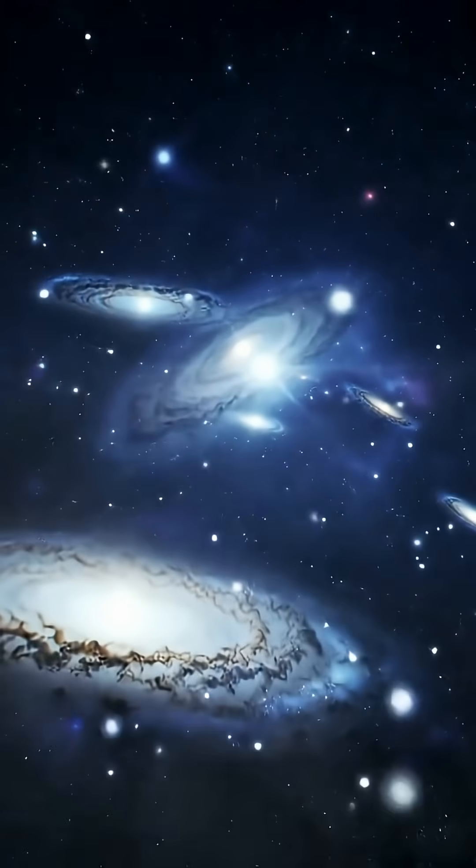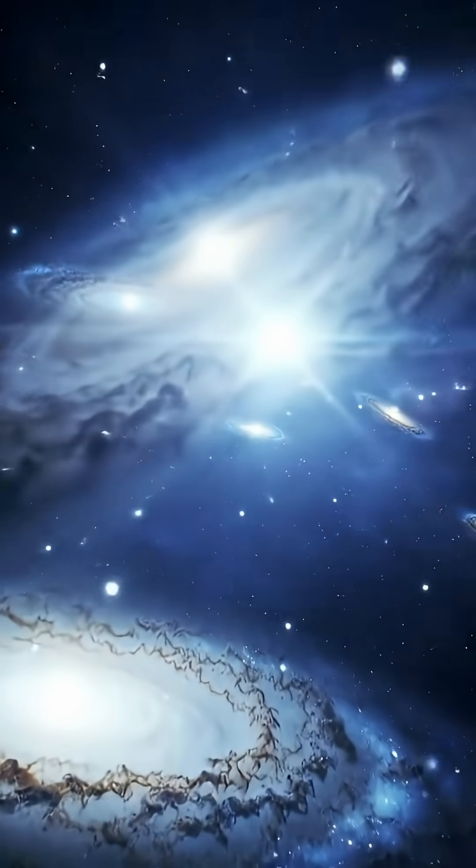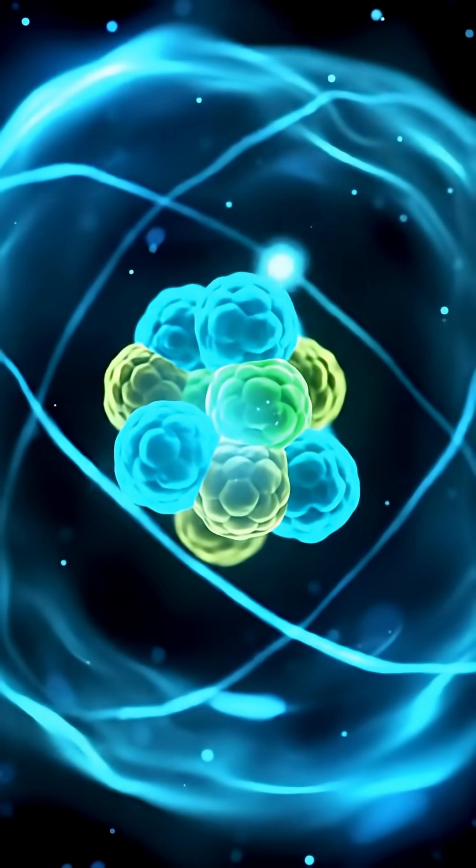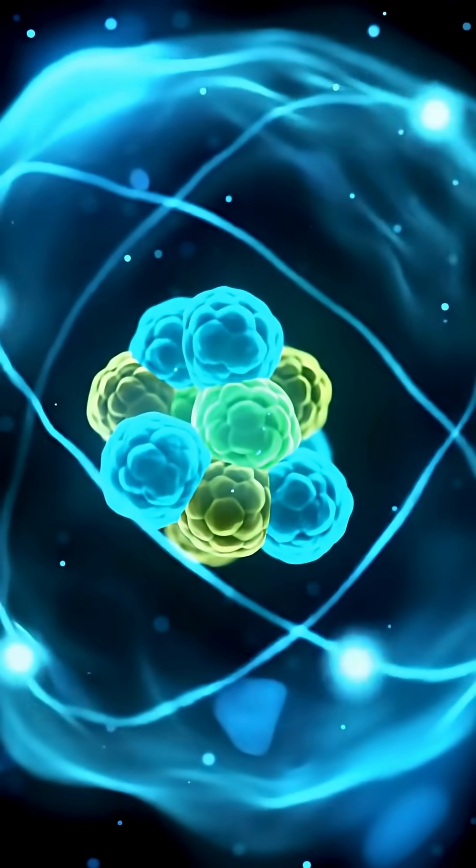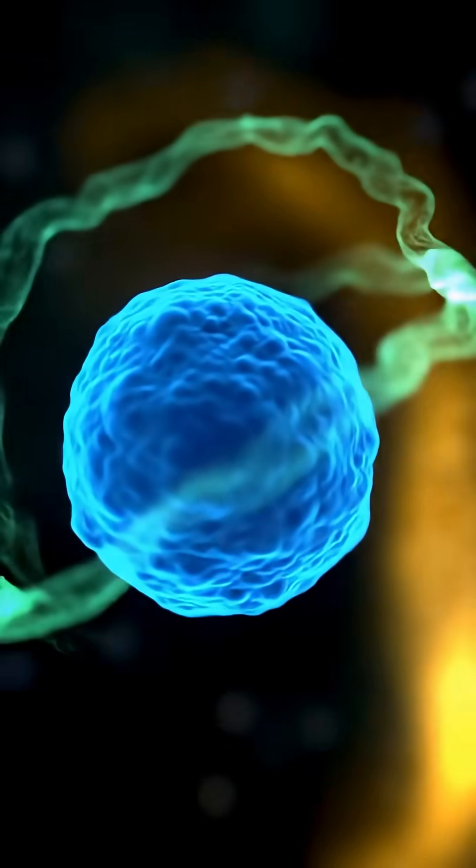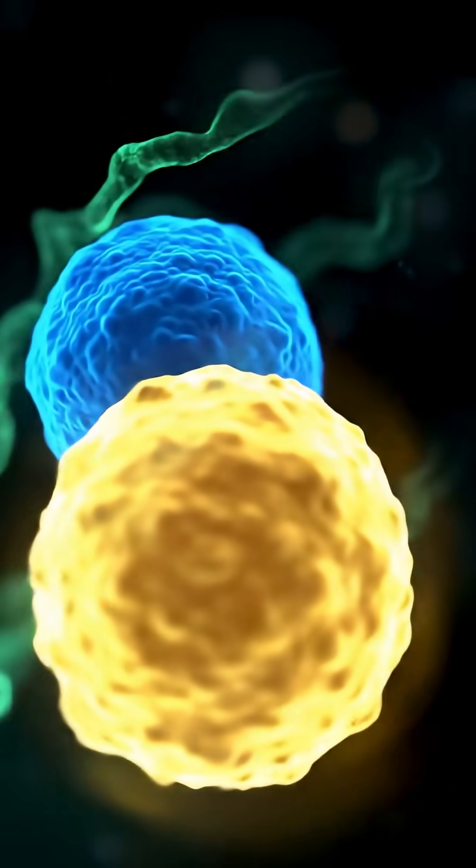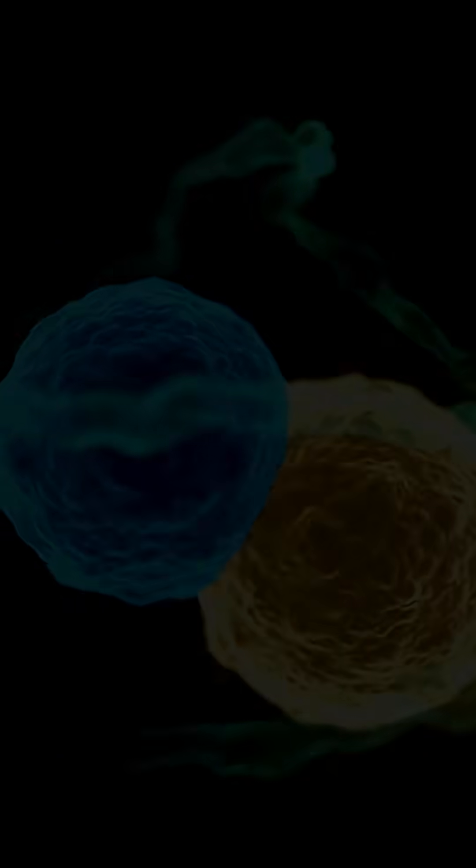You don't see them, but they shape the universe around you. Even the very structure of atoms is influenced by this hidden sea of energy. The reason electrons don't just spiral into the nucleus? Quantum fluctuations in the vacuum. So, in a sense, the nothingness is keeping matter stable.